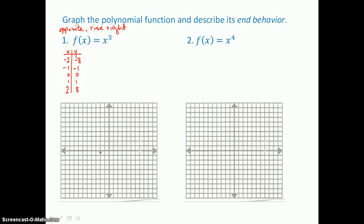So these are the points I want to put on the coordinate plane: (−2, −8), (−1, −1), (0, 0), (1, 1), and (2, 8). When I draw this curve, which is rather S-shaped — that's how we would describe the curve of a cubic — I see that it does have opposite behavior left and right. It falls to the left and rises to the right.